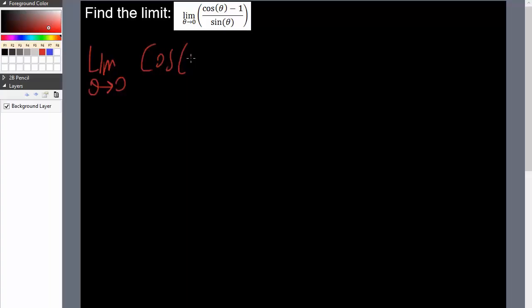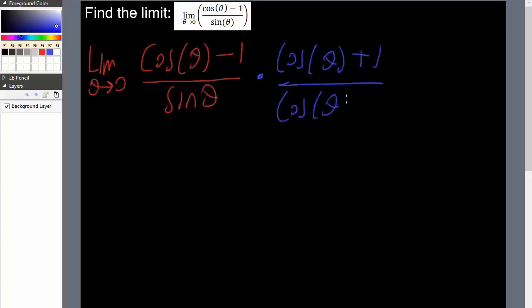So cosine theta minus 1, this is what we had, sine theta. Times cosine theta plus 1 divided by cosine theta plus 1. We're not changing anything since cosine theta plus 1 divided by cosine theta plus 1 is simply 1.